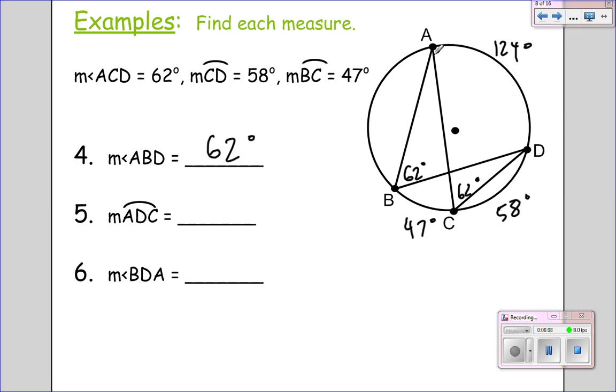Now we can figure out arc A to D to C. Well we know 124, we know 58. We add those up. We have 182 for arc A, D, C.